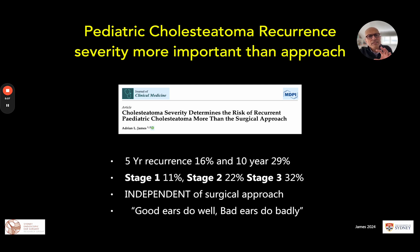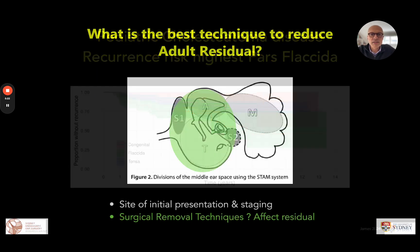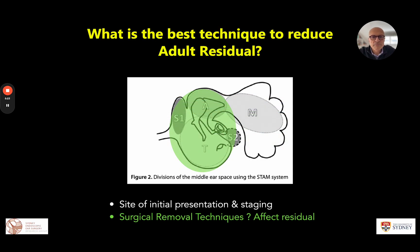This finding is most likely specific to the pediatric phenotype of disease — I'm not sure we can easily translate it into the adult case. Looking at Adrian's results, as expected, the pars flaccida has the highest recurrence risk. Now let's move on to the best surgical technique to reduce adult residual disease.